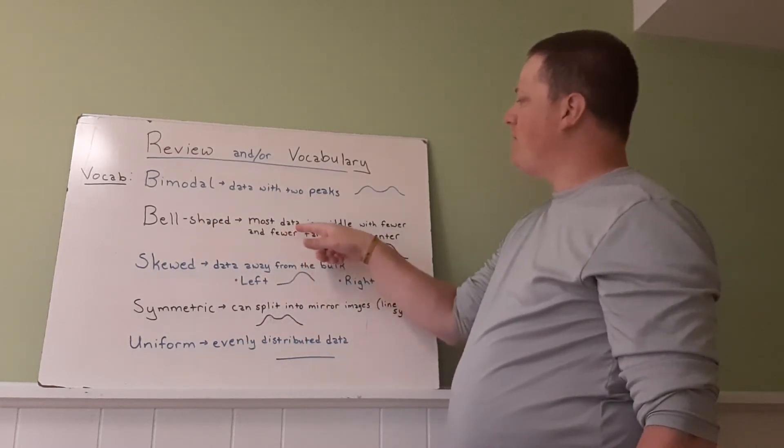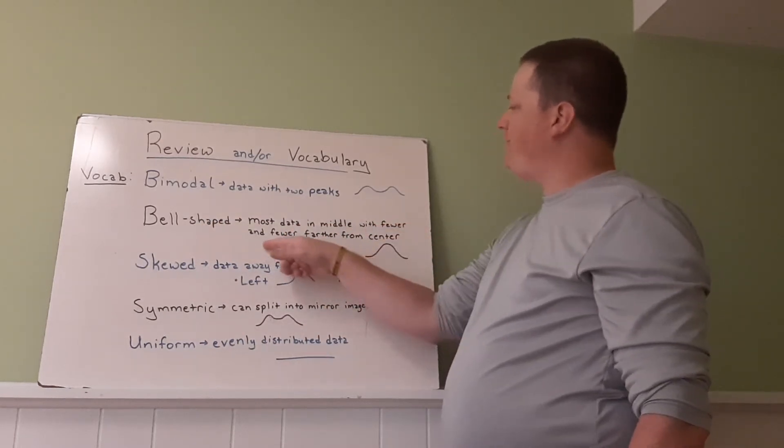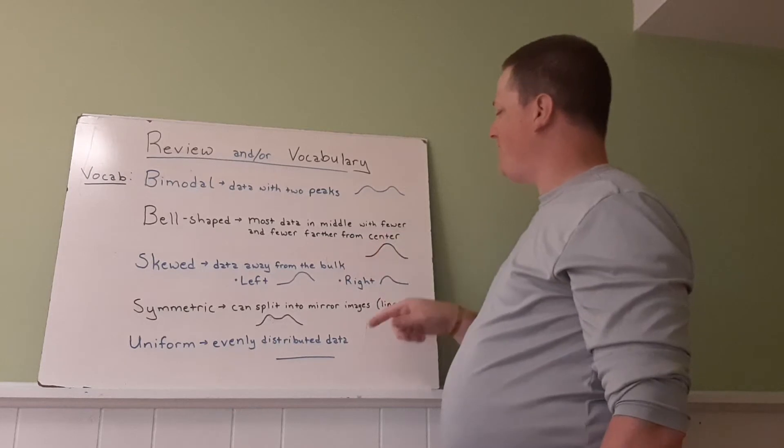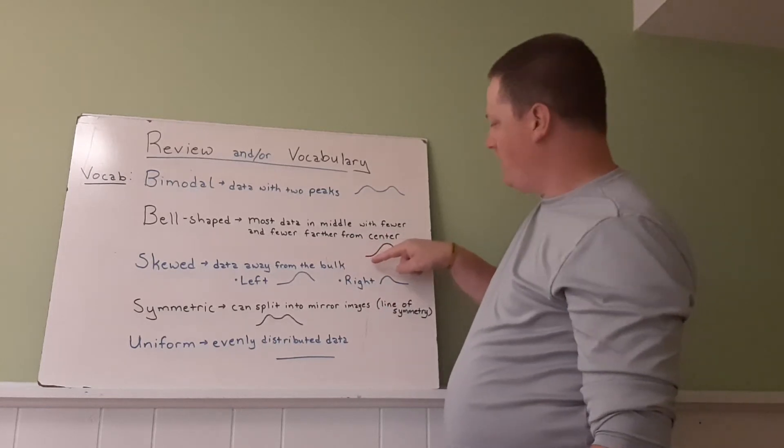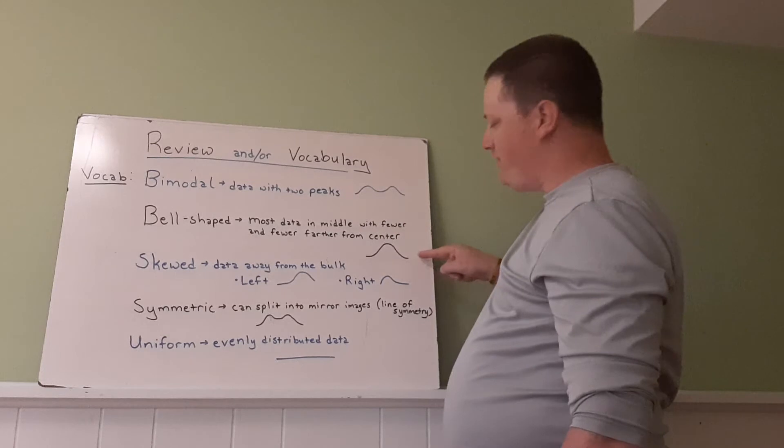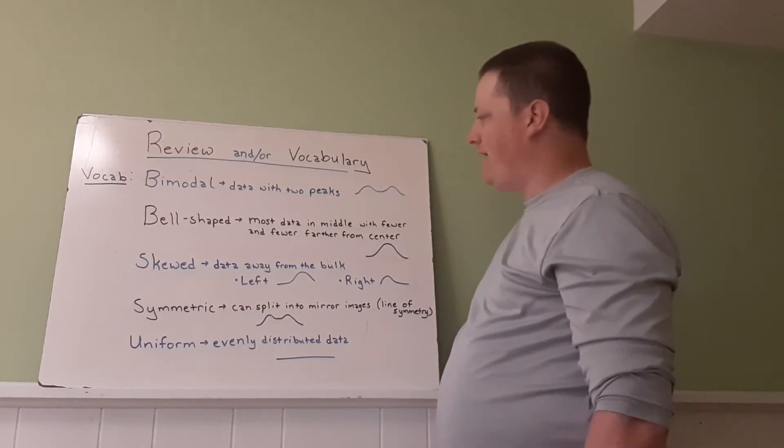Bell-shaped. Most data in the middle with fewer and fewer farther from the center. So if you start low, it'll get higher in the middle and then dip down to low again on the right side.